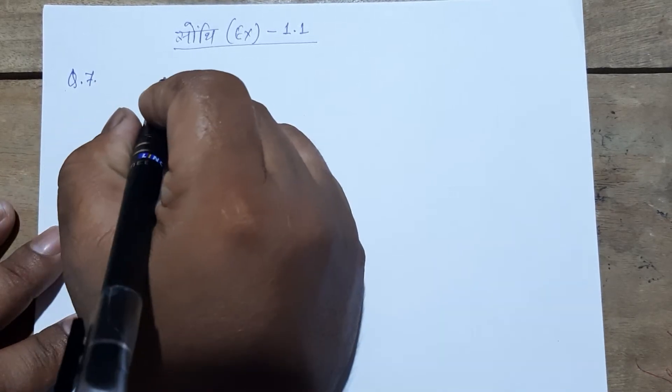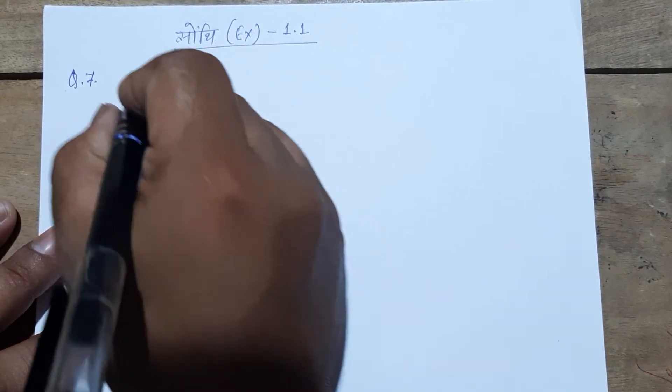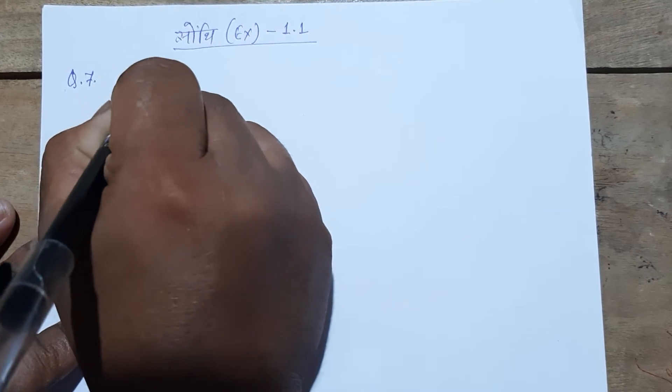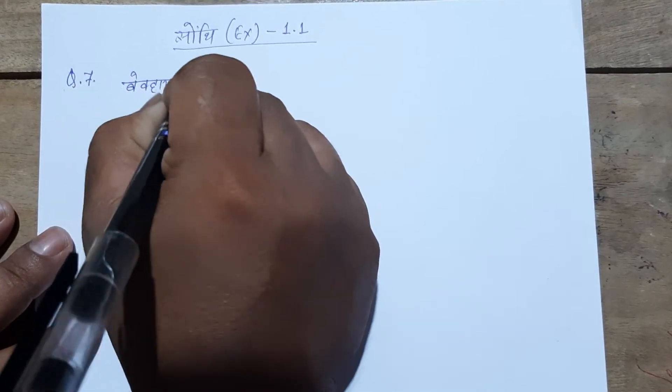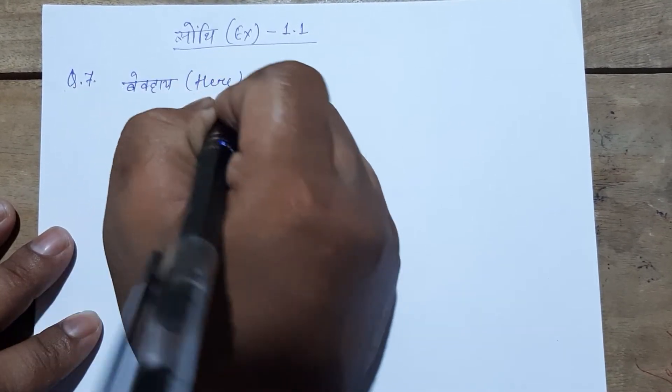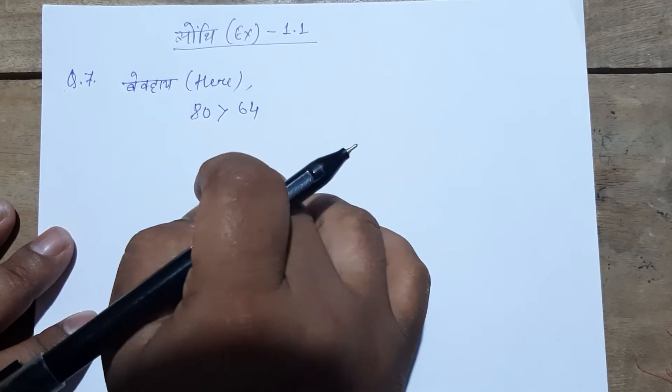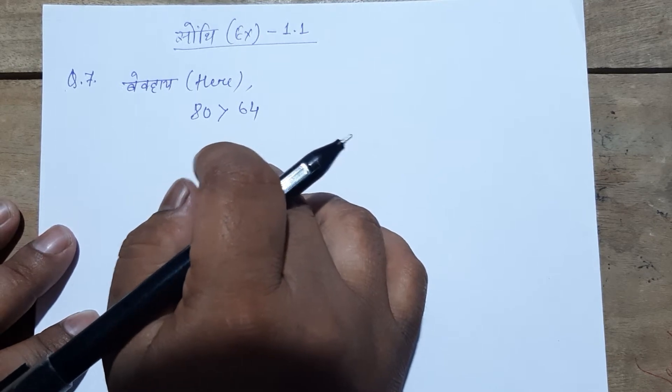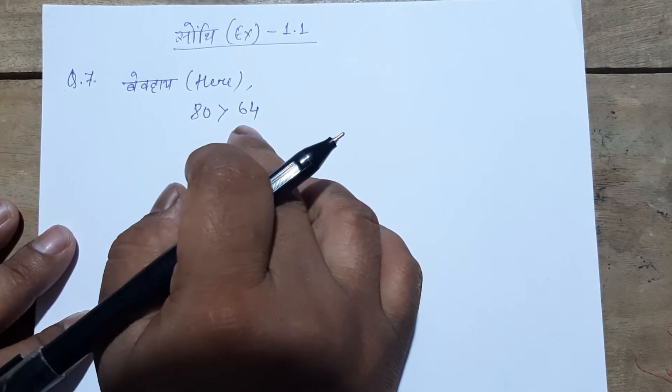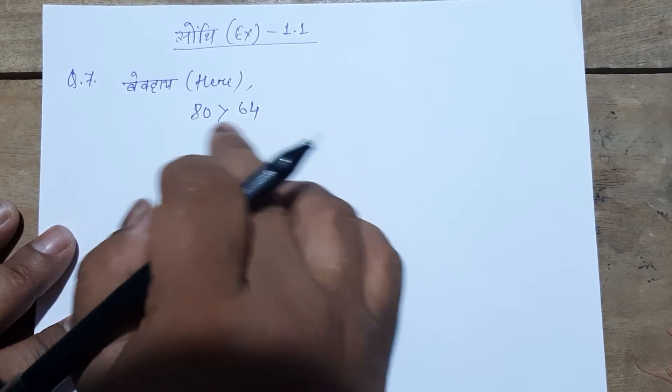Here 80 is greater than 64, so we will use Euclid's algorithm. We'll apply the division algorithm: divide 80 by 64.